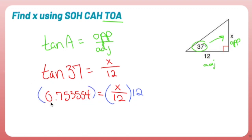So I'm going to take that ugly number that my calculator has. I'm going to multiply 12 to it and I get 9.0426 blah, blah, blah is going to equal X.